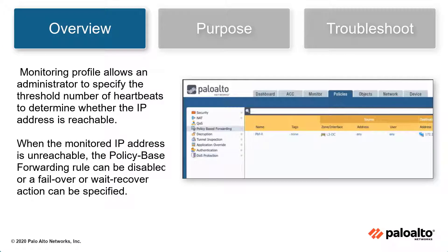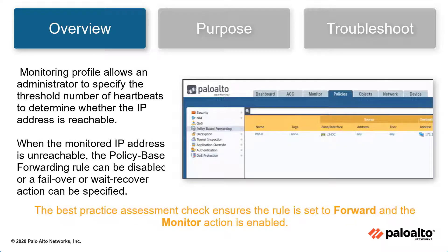A monitoring profile allows an administrator to specify the threshold number of heartbeats to determine whether the IP address is reachable. When the monitored IP address is unreachable, the PBF rule can be disabled or a failover or wait recover action can be specified. The best practice assessment checks to see if, when monitoring is enabled, the rule is set to forward and the monitor action is enabled.